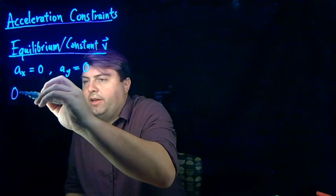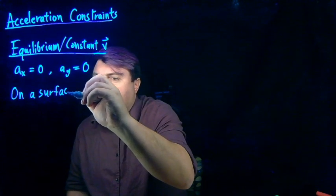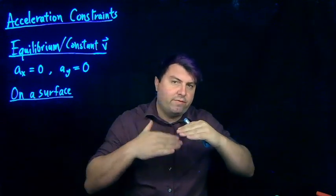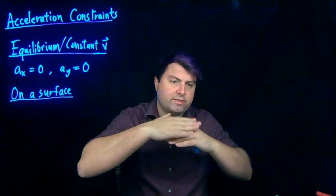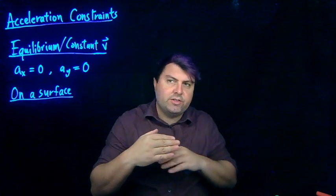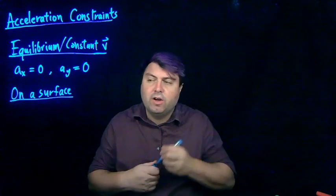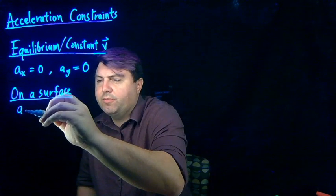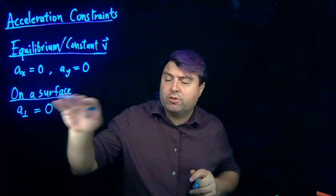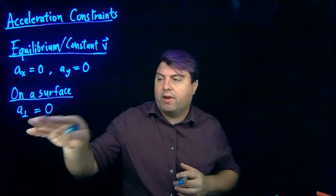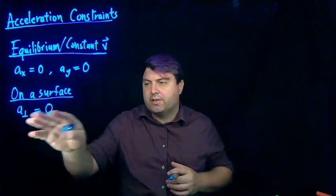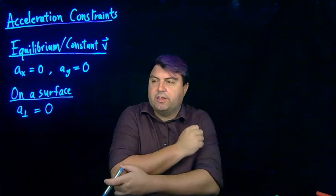If we're on a surface, then as long as our object is on a surface, it can't fall below and it can't lift above the surface — it has to stay moving in contact with the surface. Our surfaces are generally assumed not to move. So if we move on a surface, the acceleration perpendicular to the surface is equal to zero. For a horizontal surface, the perpendicular direction is the y direction, so the acceleration in y is zero. In a general sense, we say the acceleration perpendicular is zero.